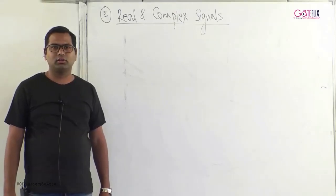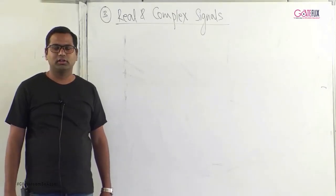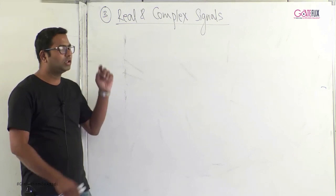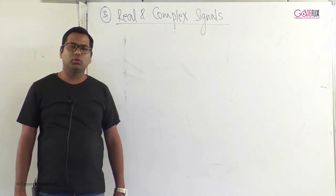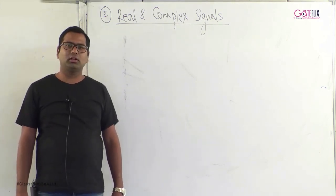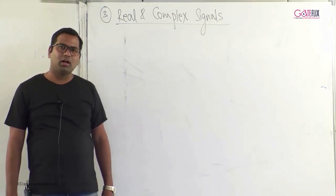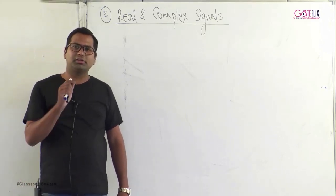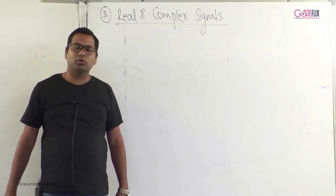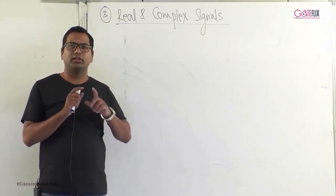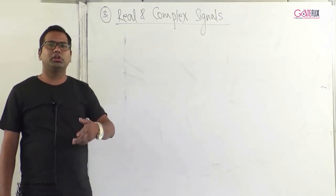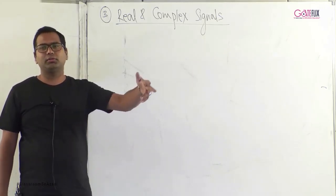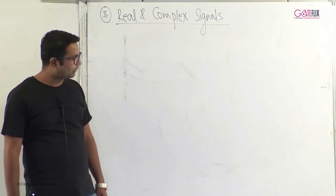The next classification of signals we are looking at is real and complex signals. A real signal is a signal which always takes real values, like 2, 3, 2.3, or 4.5.